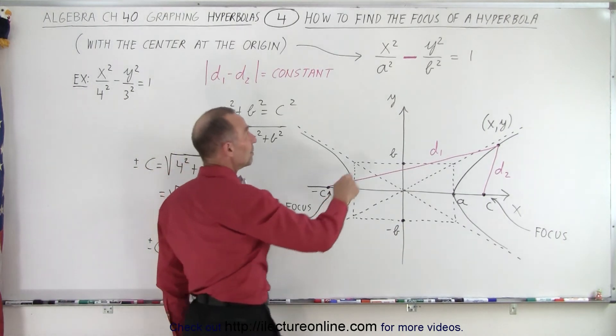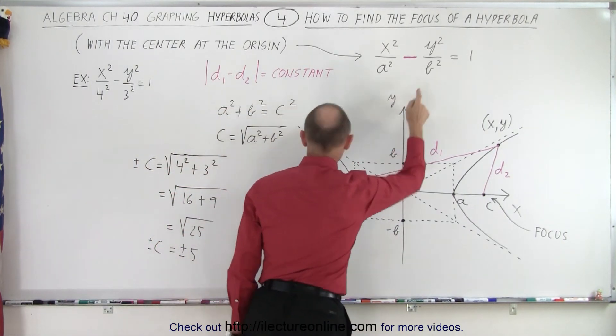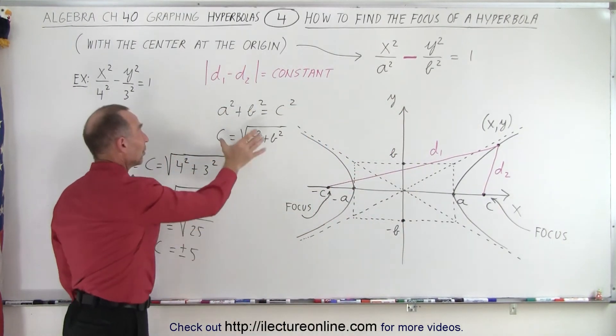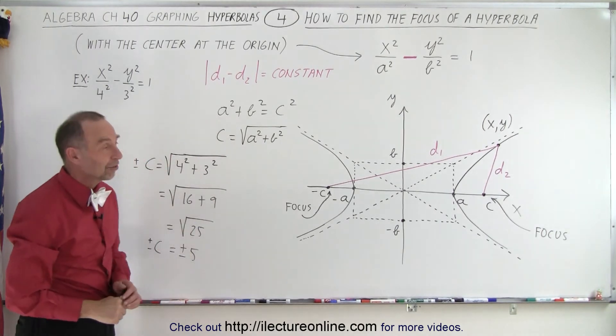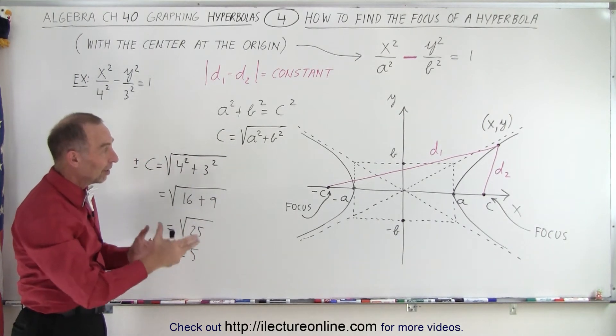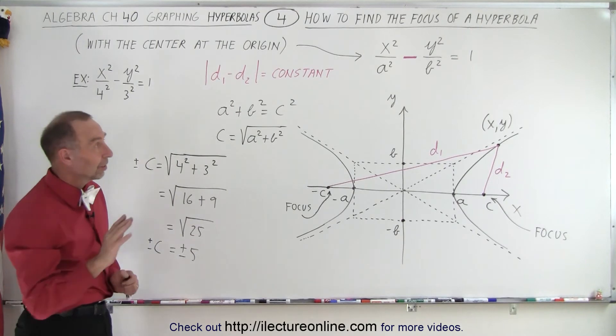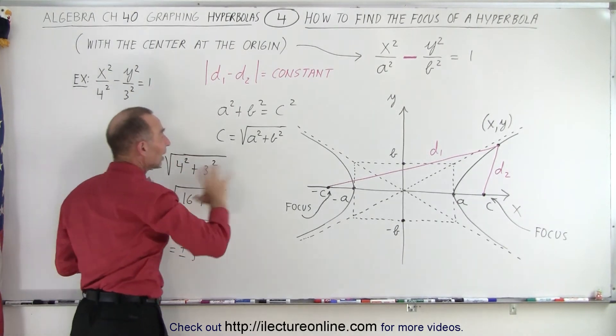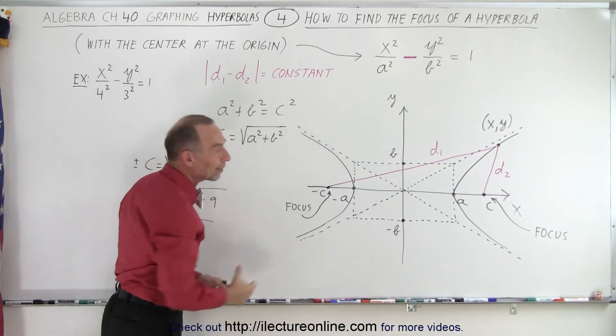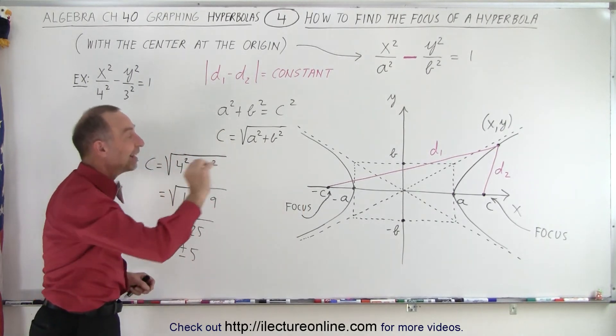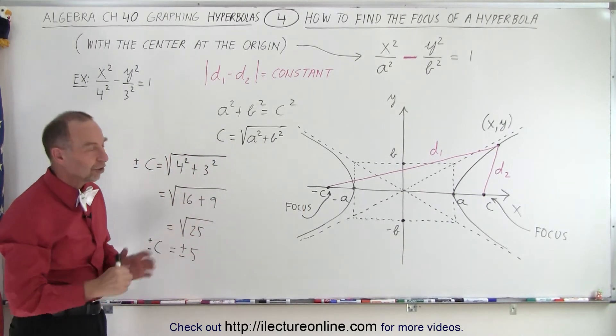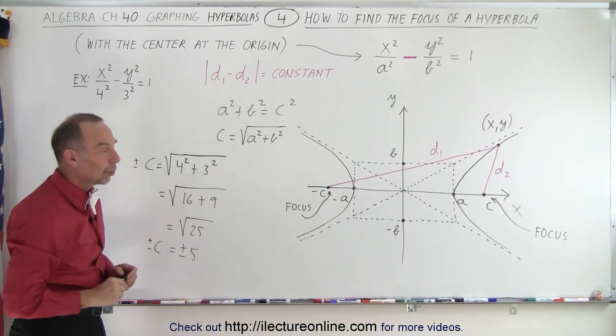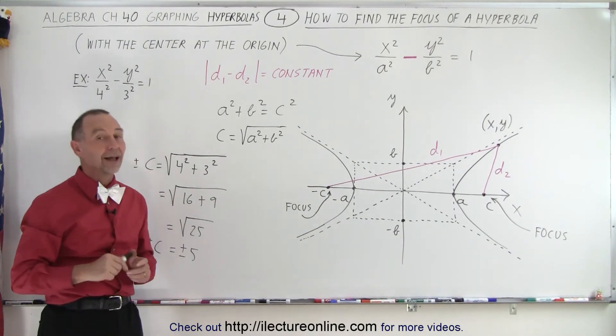Now we have a conclusion in that we understand the meaning of a, the meaning of b, and the meaning of c, and the relationship between those three constants that define a hyperbola. Again, the condition here is that the hyperbola has to have the center at the origin, because if it's not at the origin, we'll show you how that changes things by offsetting the center to a new location. We'll show you how to do that on the next video.